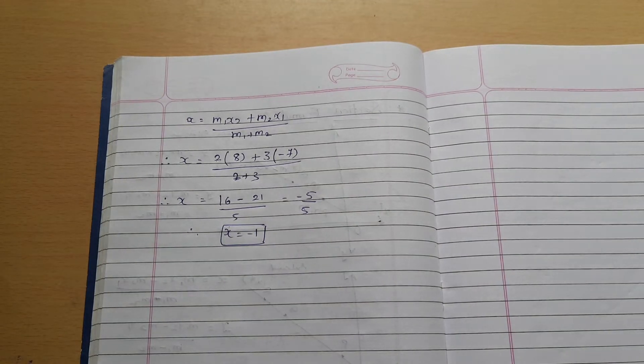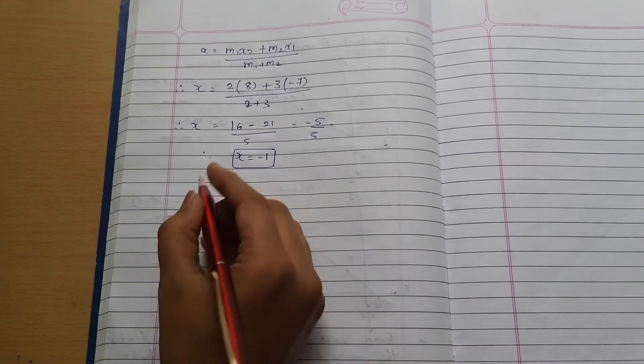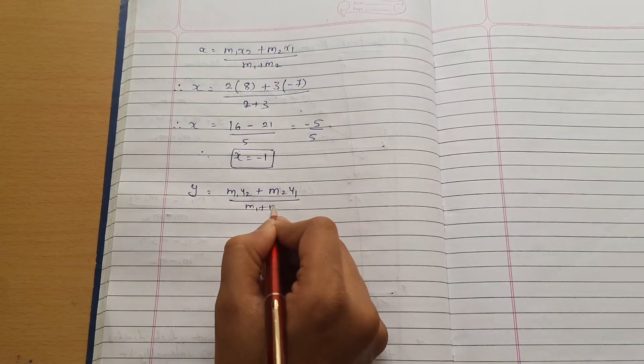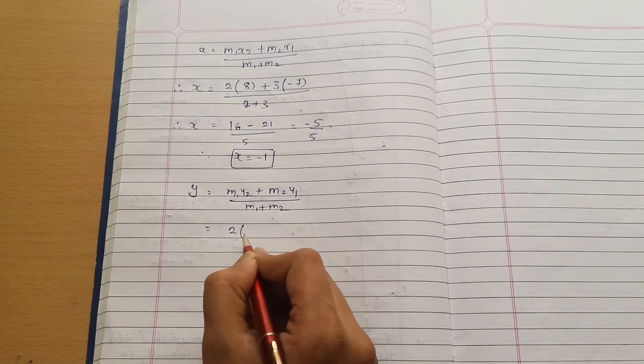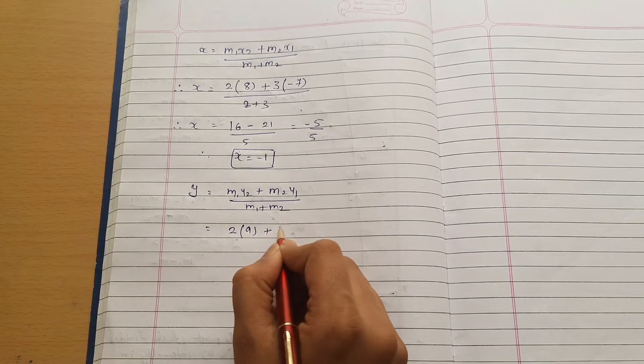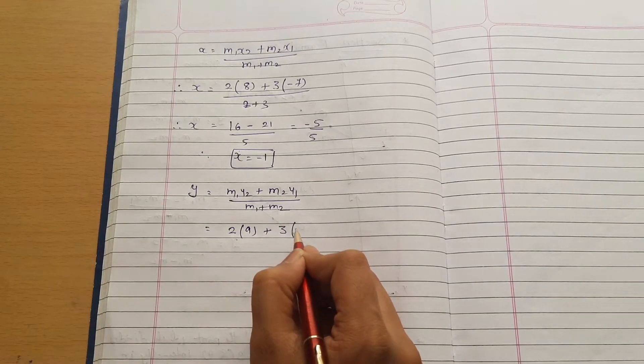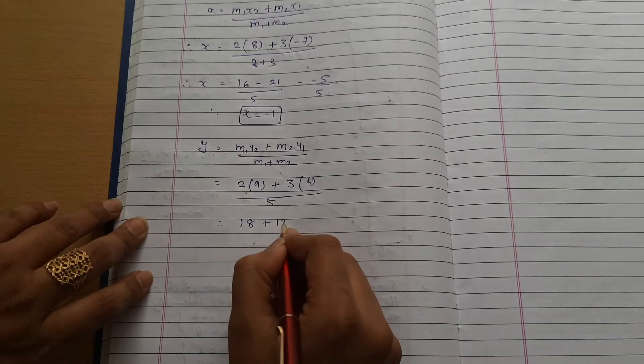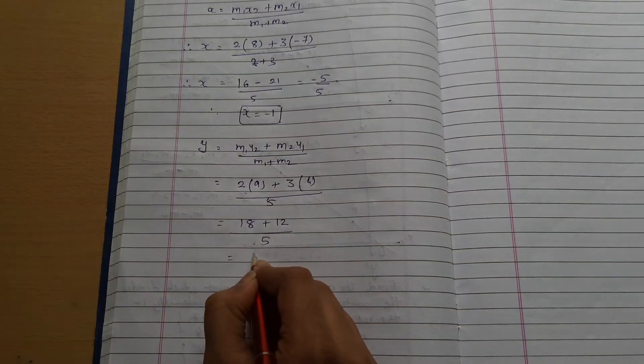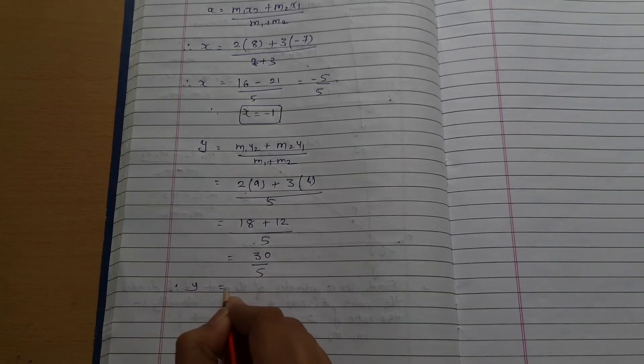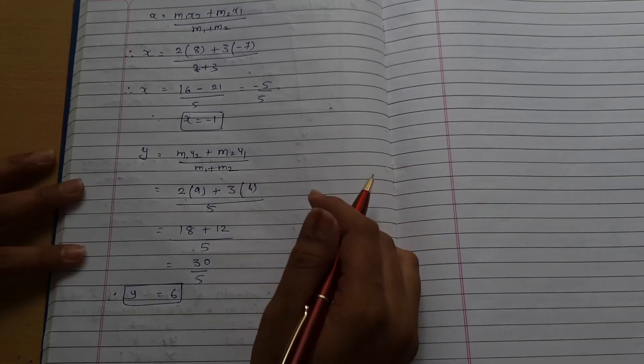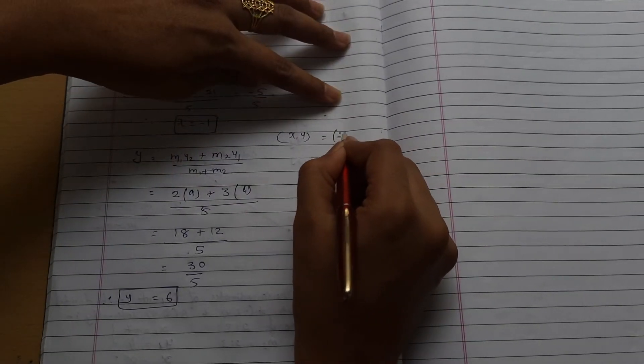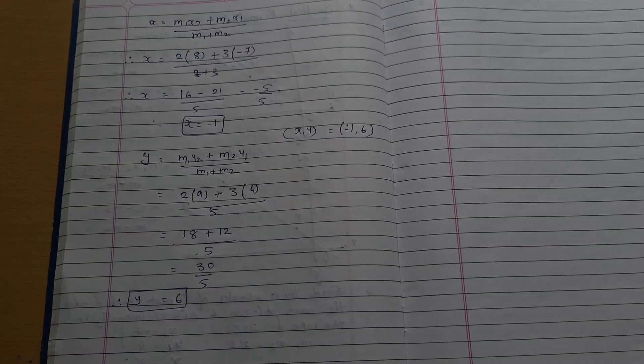Now for y coordinate: m1 y2 plus m2 y1 divided by m1 plus m2. m1 is 2 and y2 is 9, m2 is 3 and y1 is 4 divided by 2 plus 3, which is 5. So this is 18 plus 12 divided by 5, that will be 30 divided by 5, so y equals 6. Both coordinates are x and y equals minus 1 and 6. This is the answer.